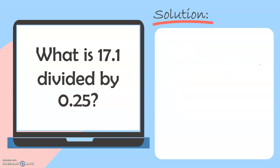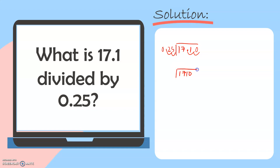And for our last example — what is 17.1 divided by 0.25? Let's solve here. We have 17.1 divided by 0.25. For us to make our divisor a whole number, we need to move the decimal point twice to the right. We'll also do the same in our dividend. Since there's no digit in that position, we will add a placeholder 0. So our new numbers now are 1710 and 25.